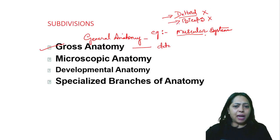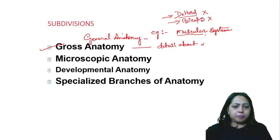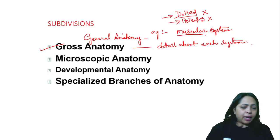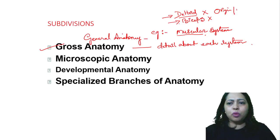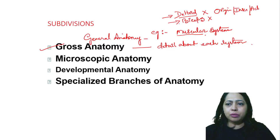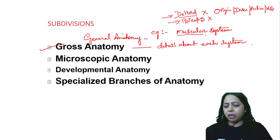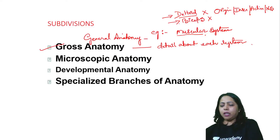Gross anatomy covers detail about each system. For any muscle, you have to know its origin, insertion, and action, and you should also know the nerve supply. All these things are very, very important.